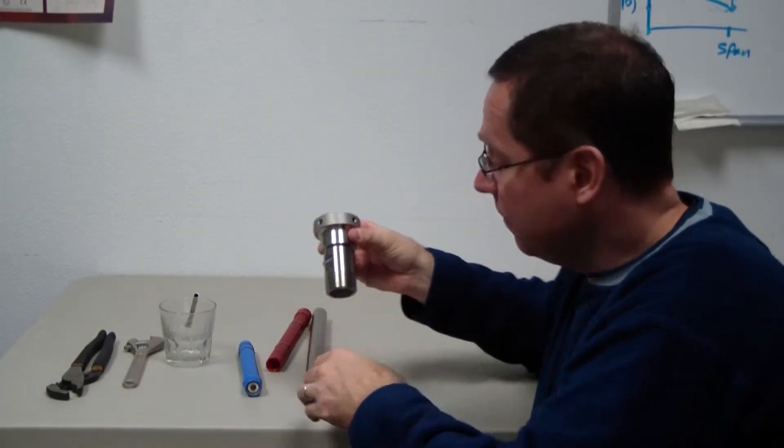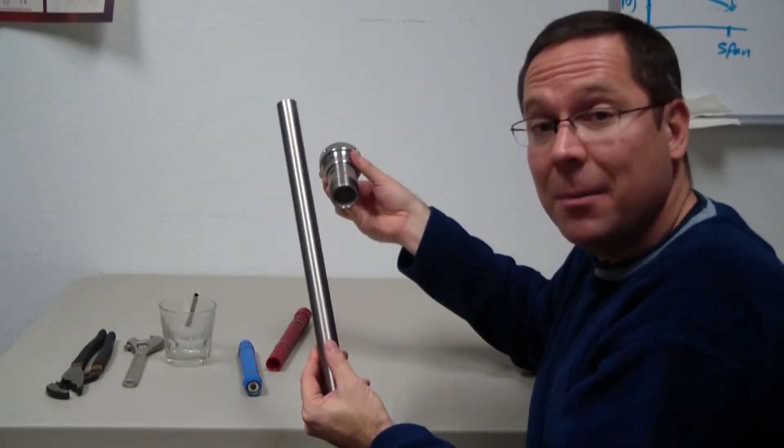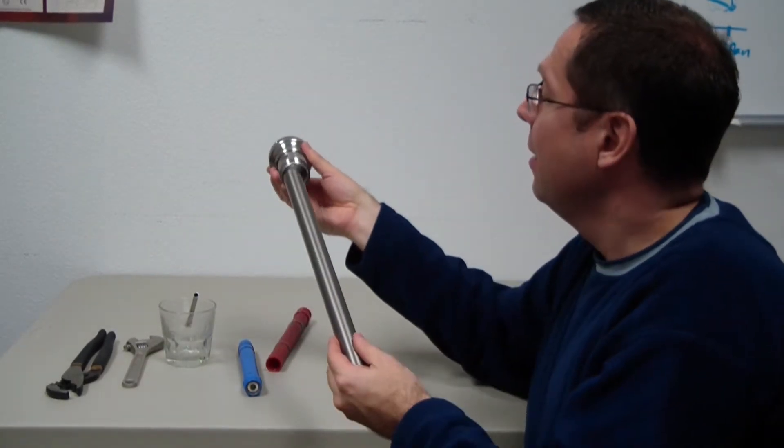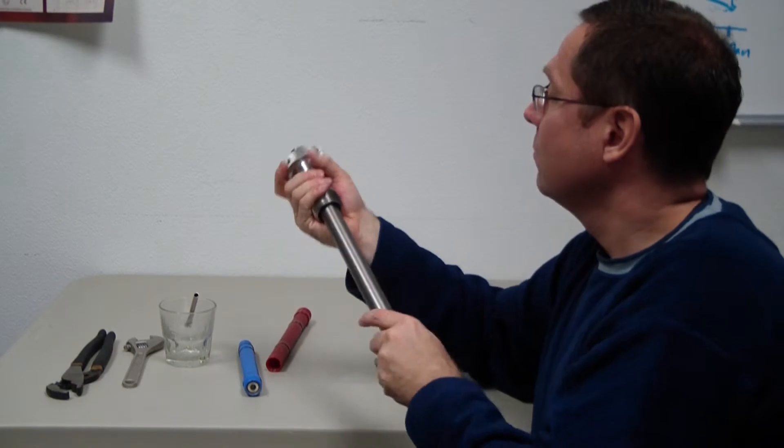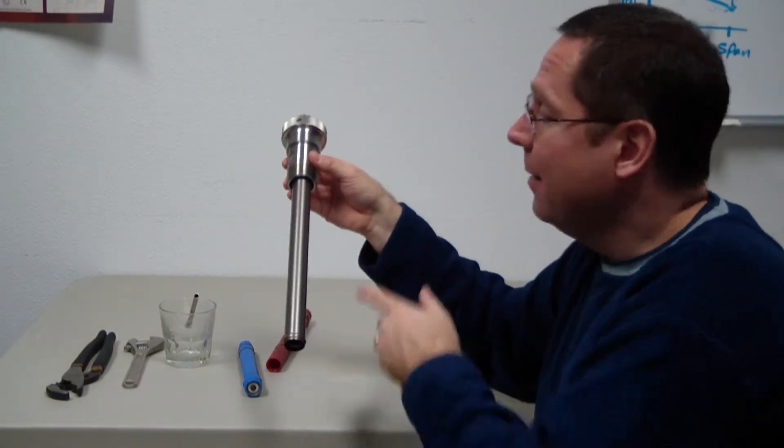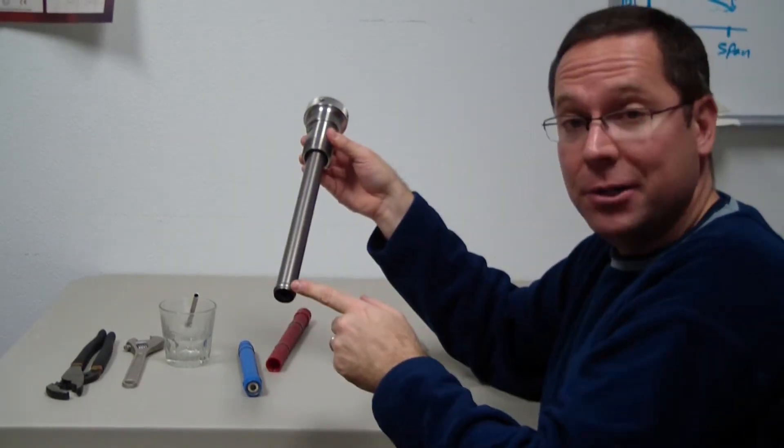So let's put one together. First off, I'll take my metallic sheath and put the compression fitting on. You put it on opposite from the flare tip.